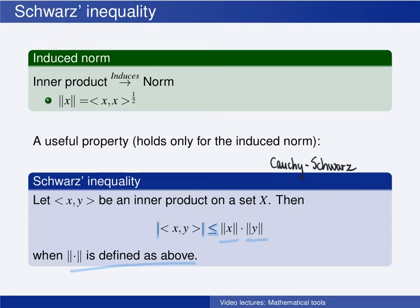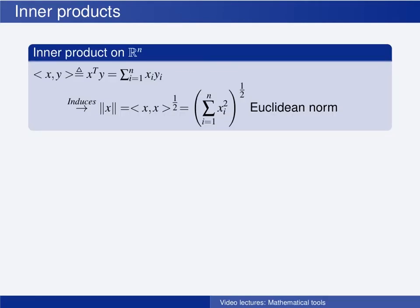So what is this norm, and first of all, what is the inner product of the sets that we are particularly interested in? Let us first consider the set of n-dimensional vectors. The inner product between two vectors x and y is defined as x transposed times y, which is defined as the sum of all the vector elements multiplied together. We find the norm that the inner product induces by using the definition: the induced norm of x is found by first taking the inner product of x with itself and then taking the square root. When we use the definition of the inner product, we see that what we get is the Euclidean norm, the two-norm.